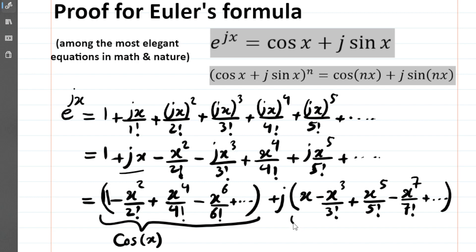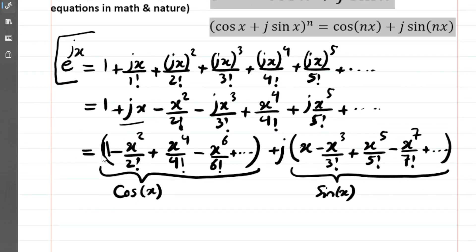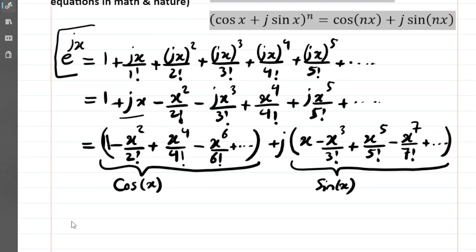This shows that we started from the power series and arrived at these expressions. As a result of this whole derivation, we proved Euler's famous formula: e^(jx) = cos(x) + j*sin(x).